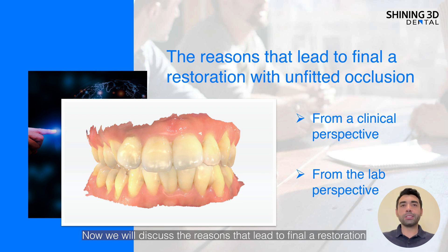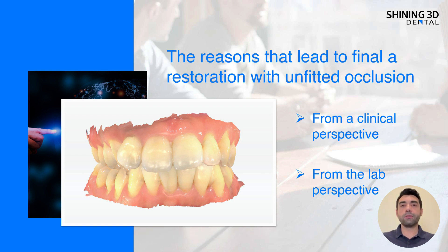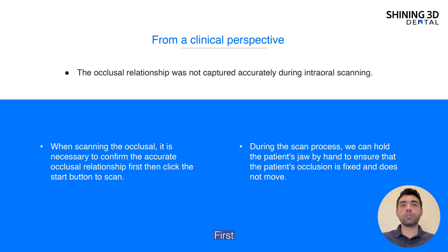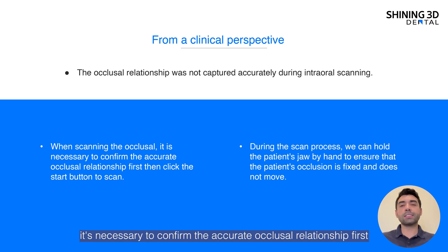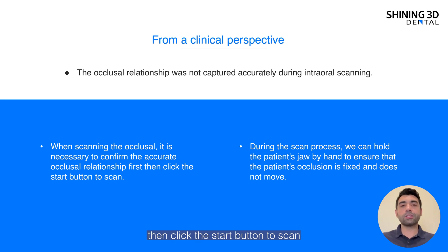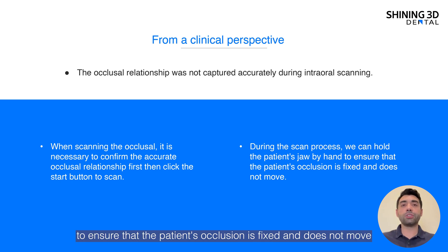Now, we will discuss the reasons that lead to a restoration with unfitted occlusion from two perspectives. One is the clinical, the other one is the lab. From a clinical perspective, first, the occlusal relationship was not captured accurately during the scanning process. In these cases, we suggest that when scanning the occlusion, it is necessary to confirm the accurate occlusion relationship first, then click the start button to begin the scan. During the scan process, we can hold the patient's jaw by hand to ensure the patient's occlusion is fixed and does not move.